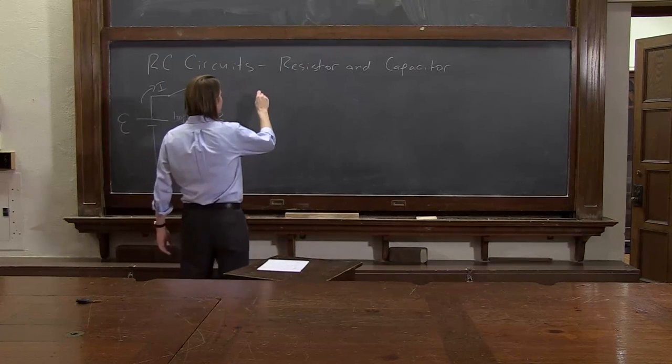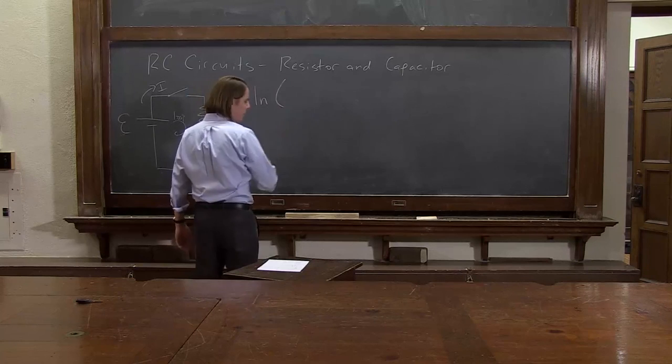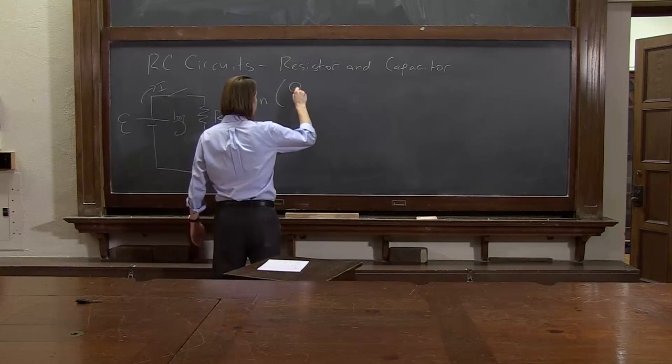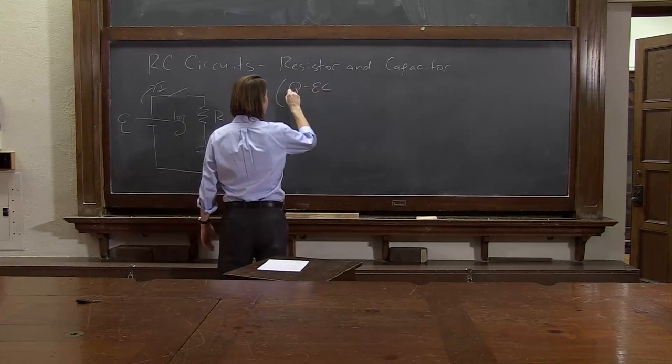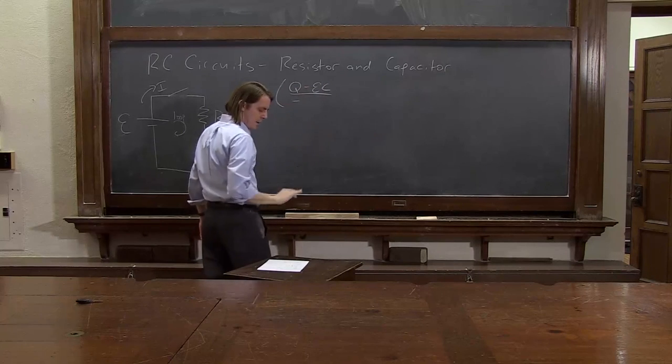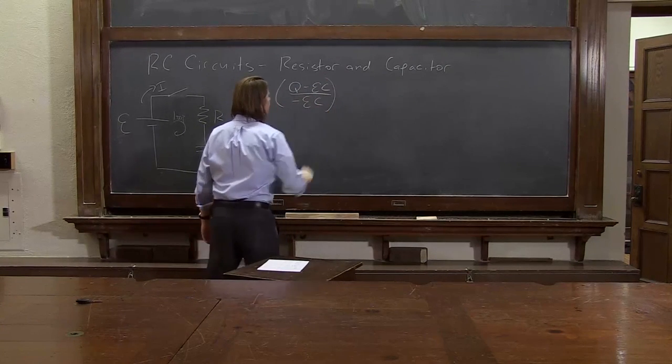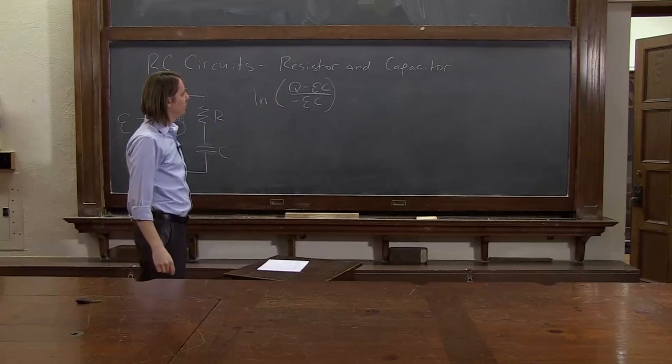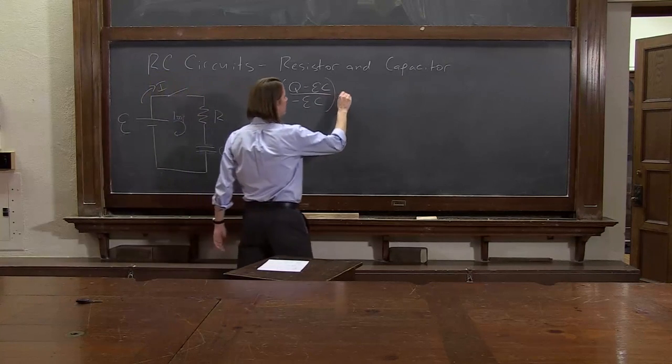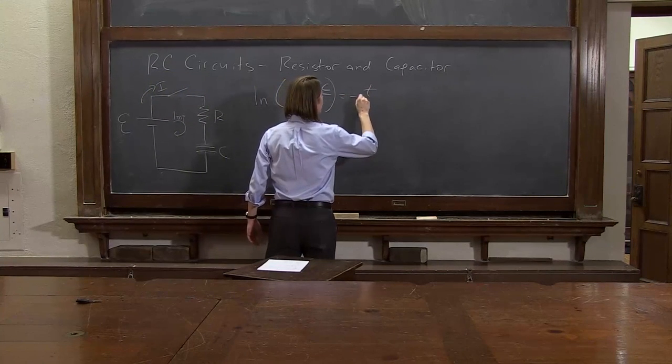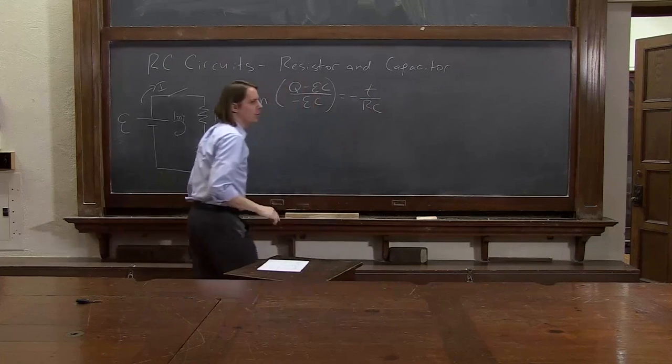So that means we can rewrite what we just had as the natural log of Q minus the EMF times C over negative EMF times C. That's just those two log terms, equals minus time over RC.